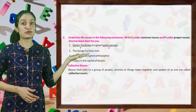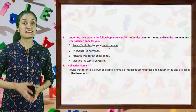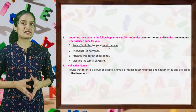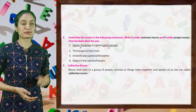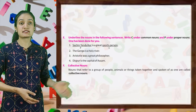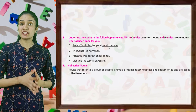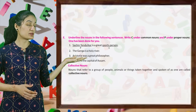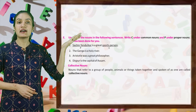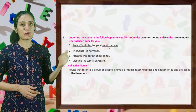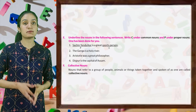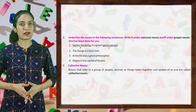So let's underline the nouns in the following sentences. Write C under common nouns and P under proper nouns. One has been done for you. Let's see the first one: Sachin Tendulkar is a great sports person. So, Sachin Tendulkar is a proper noun and sports person is a common noun. In the same way, you have to underline proper nouns and common nouns.